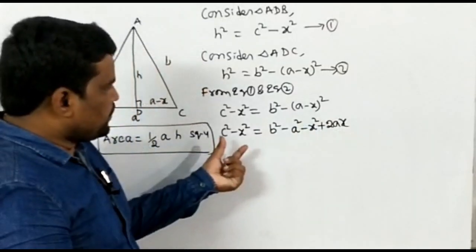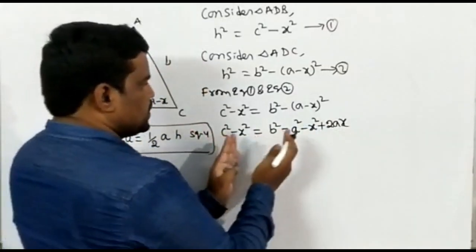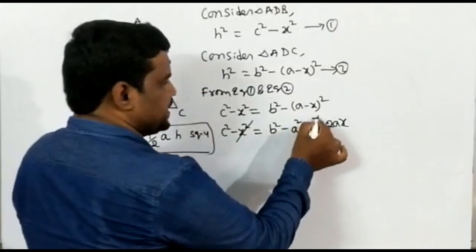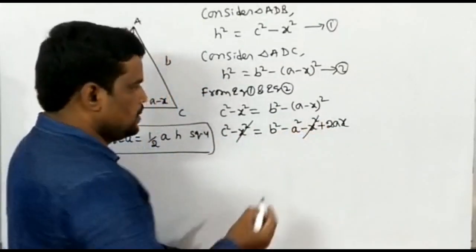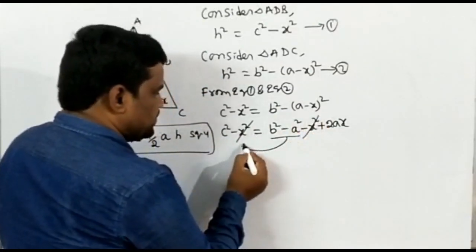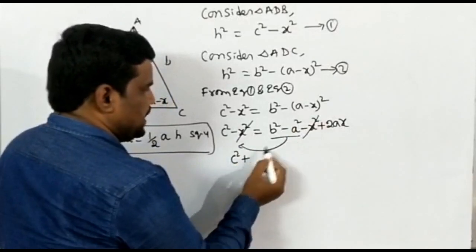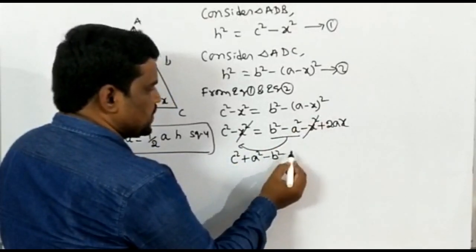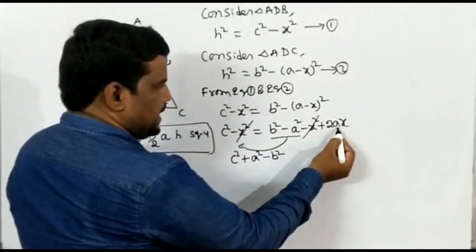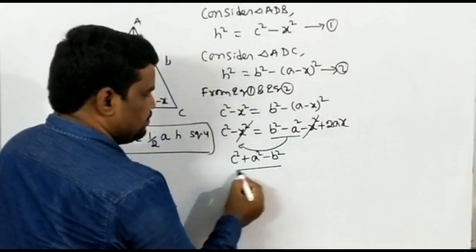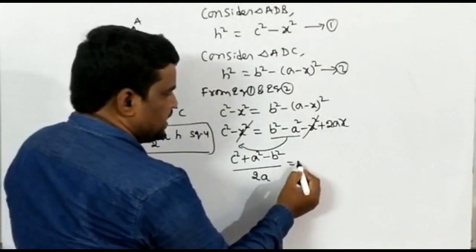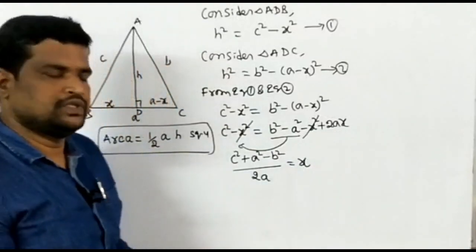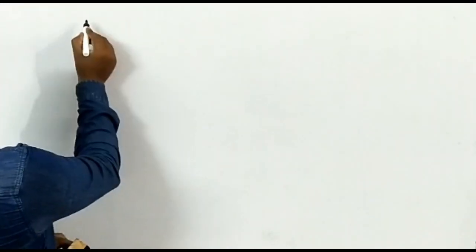Observe that the X² terms on both sides cancel. Rearranging, we get: C² + A² − B² = 2AX. Dividing both sides by 2A, we get the value of X: X = (A² + C² − B²) / 2A.